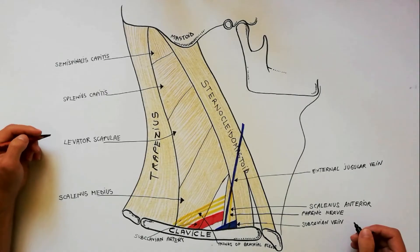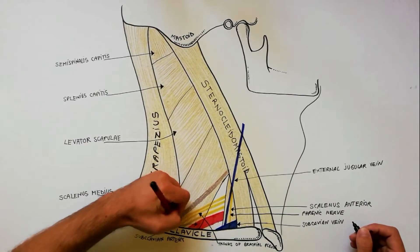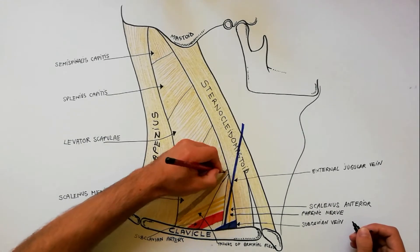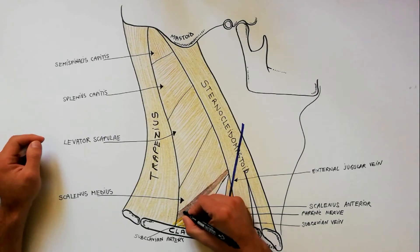The posterior triangle is subdivided into two parts by the inferior belly of omohyoid which crosses the lower part of the triangle obliquely upwards and forwards.